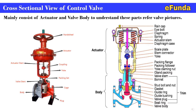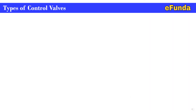The main parts of the control valve — actuator, valve positioner, and valve body — are shown in the typical cross-sectional view of the control valve. We have seen briefly all the main parts. Now we have reached the stage where one should understand the types of control valves.